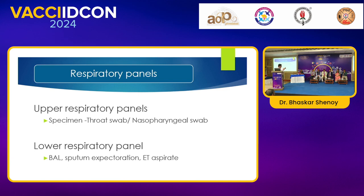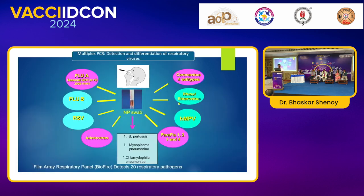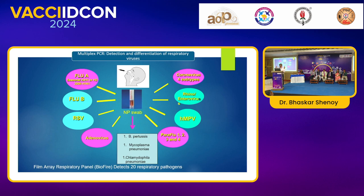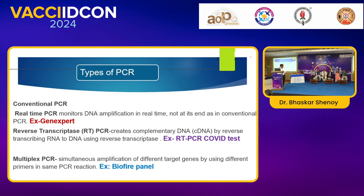Now we have the answer — antibiotics were de-escalated and we continued for the full course. The child is now stable and shifted to the ward. Regarding upper versus lower respiratory specimens: upper respiratory gives throat swab or nasopharyngeal swab; lower respiratory gives bronchoalveolar lavage, sputum, or tracheal aspirate. The multiplex PCR — depending on the panel — can detect multiple viruses. The FilmArray panel contains around 20 respiratory pathogens. Organisms like pertussis, mycoplasma, and chlamydia which cannot be detected by conventional methods can be detected. About 20 organisms can be detected.